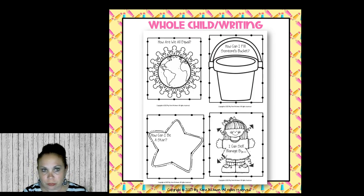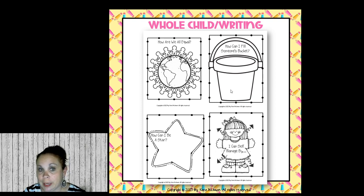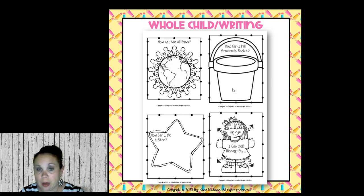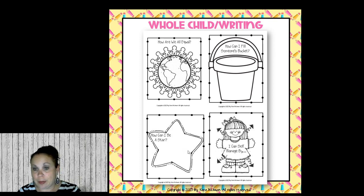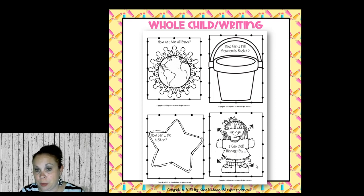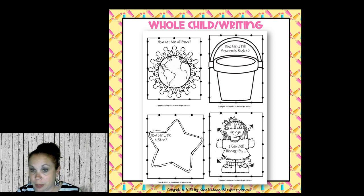Additional whole child templates include 'How can I fill someone's bucket?' — where they write sentences or words inside a bucket — 'How are we all equal?' — writing on children-around-the-world images — 'How can I be a star?' and 'How can I self-manage?' where they write words on the arrows and glue the page into their whole child notebook. It's just another great way to do writing cross-curricular during morning meeting time.